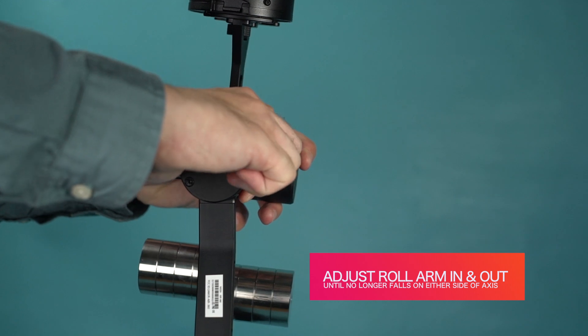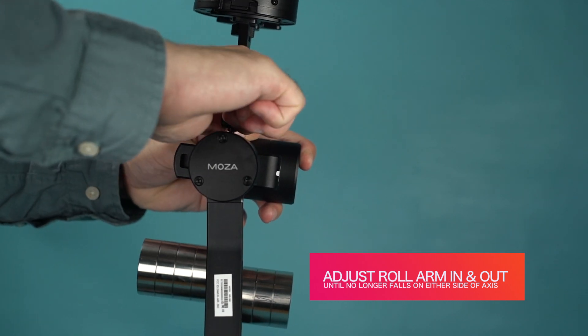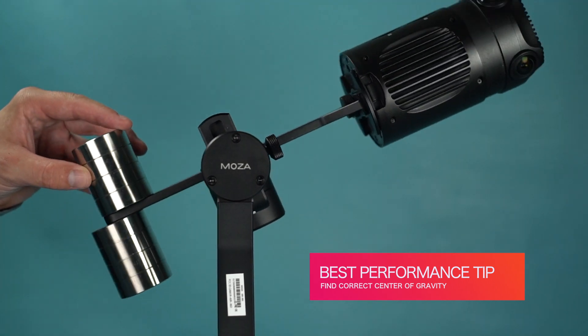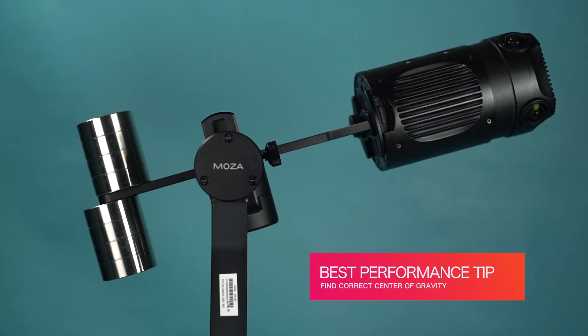Adjust the roll arm in and out until the camera no longer falls to either side on the roll axis. By finding your camera's correct center of gravity, you'll get the full performance of the MozaGuru 360 Air.